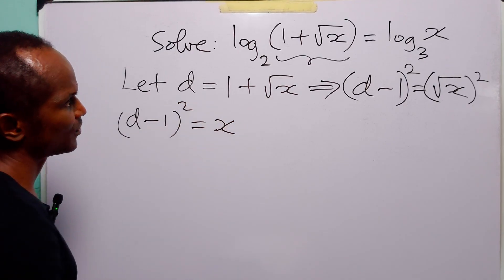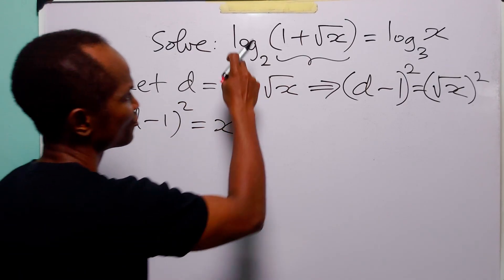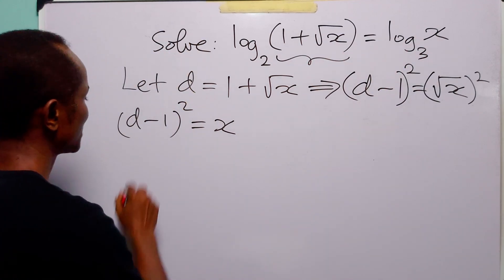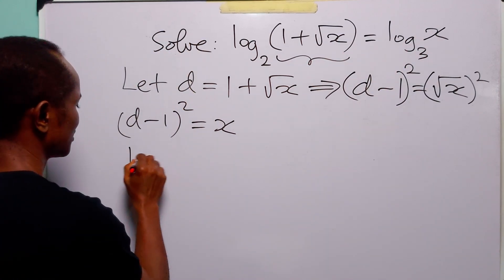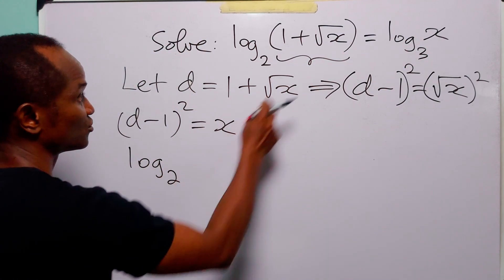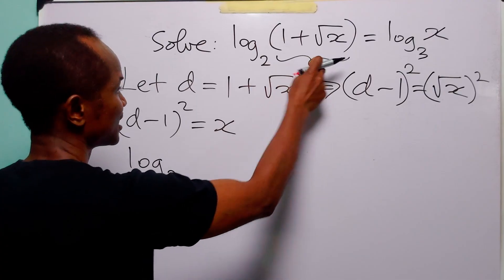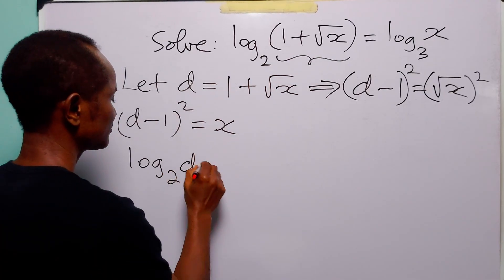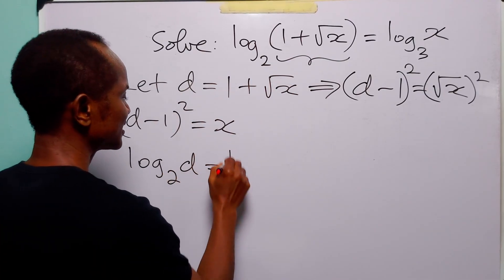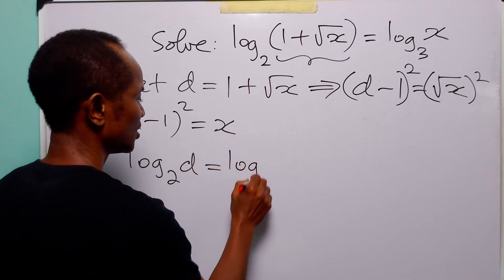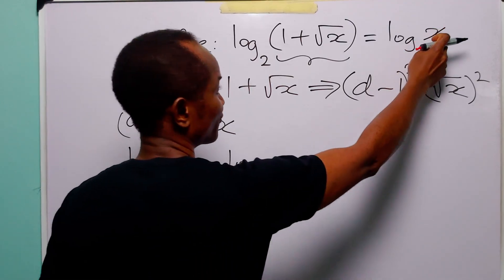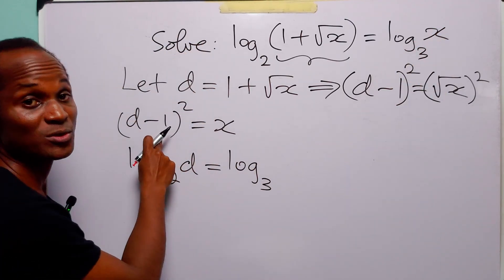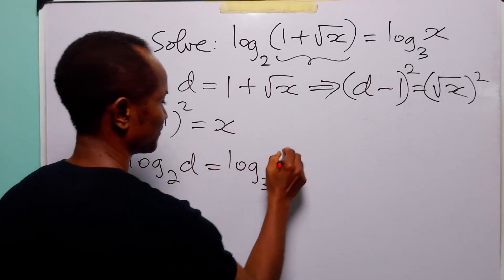The next thing we are going to do is to rewrite the original equation. We now have that log to base two of (1 plus root x), which is now equal to d, is equal to log to base three of x, which is now equal to (d minus one) squared.